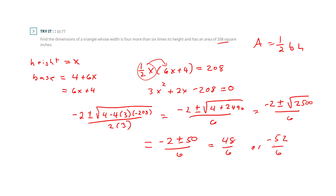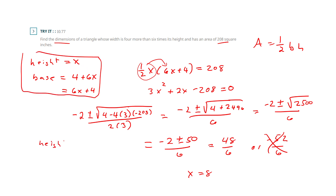The negative option is not possible since we're talking about height, so I discard it. Simplifying 48 over 6, x equals 8. Going back to my dictionary, the height is x, so the height is 8 inches. My base is 6 times 8 plus 4, which is 48 plus 4, giving 52 inches.